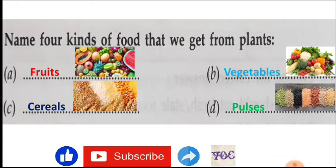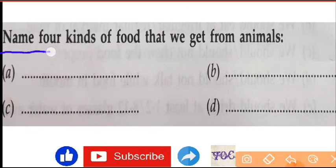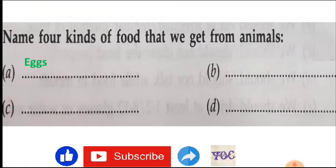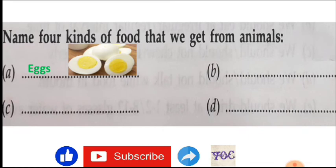Next, you can see there is one question: name four kinds of food that we get from animals. So that you can get, you know that, na? Yes, eggs. Eggs are very important for health.